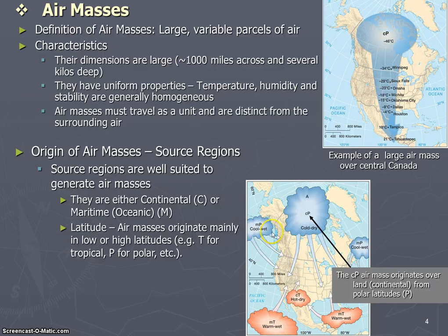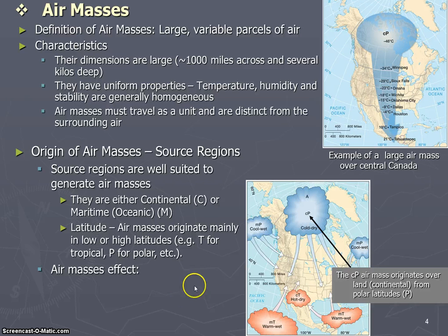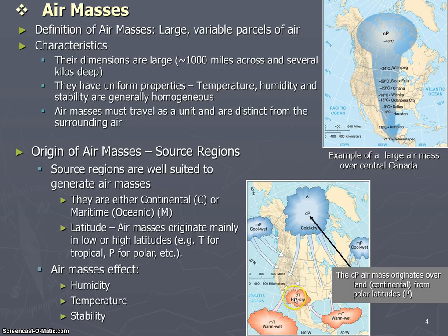You'll notice some differences here. All of the polar masses are cold, but the maritime polar will be wet and cold, while the continental polar will be dry and cold. The maritime tropical air masses will be warm and wet, whereas the continental tropical will be hot and dry as it originates over the continent. Air masses, in the places they travel to, are going to affect humidity, temperature, and stability. When a continental tropical air mass comes into contact with a continental polar air mass, the opposing air masses will likely generate a warm front, a cold front, and some instability.